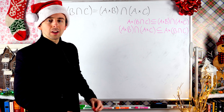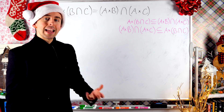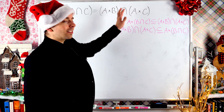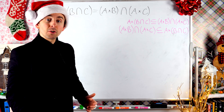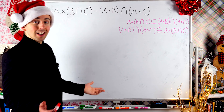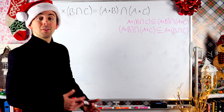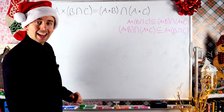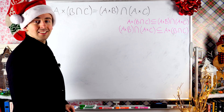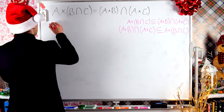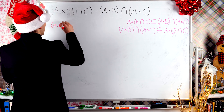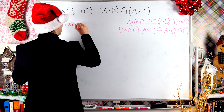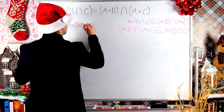To prove that subset relationship, we need to start with an arbitrary element from the set on the left and show that element also belongs to the set on the right. To take an arbitrary element from a Cartesian product, it's the set of all ordered pairs where the first element comes from the set on the left and the second element comes from the set on the right. So we'll take this arbitrary element from the Cartesian product and call it (a, e). This ordered pair (a, e) is an element of the set on the left: A cross B intersect C.